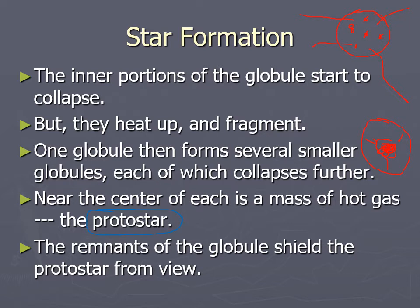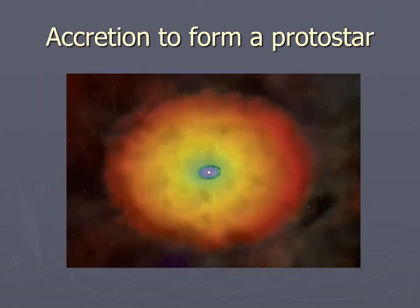We call this object a protostar — the term we use for something that's going to become a star. The outer parts of the globule are still there and are sometimes called a cocoon nebula because they're shielding the view of the star being born on the inside, as the gas transforms itself from interstellar medium into a star.